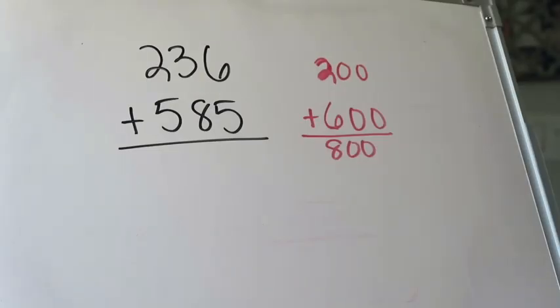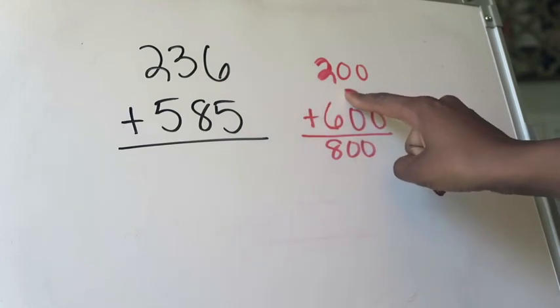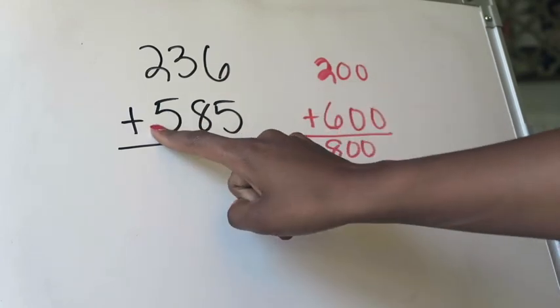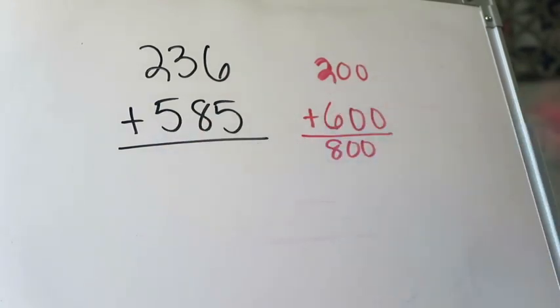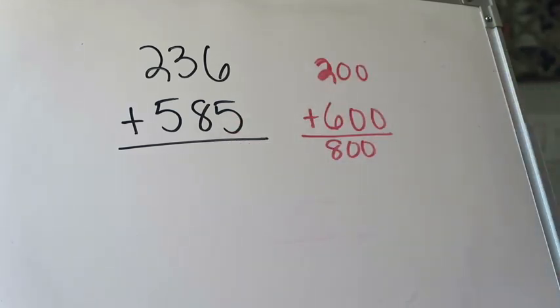Here we have our problem: 236 plus 585. I have gone ahead and come up with my estimated answer. 236 rounded down to 200, 585 rounded up to 600 based on my rounding rules. Now I'm going to come up with my real answer, keeping in mind that my real answer has to be somewhere around 800 for me to be confident in it.